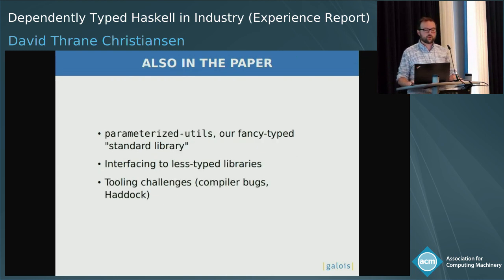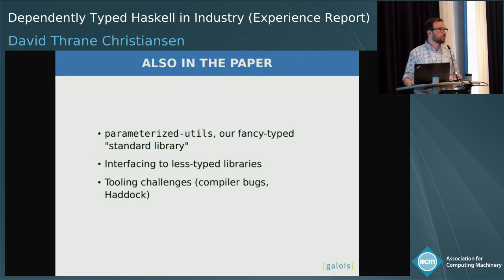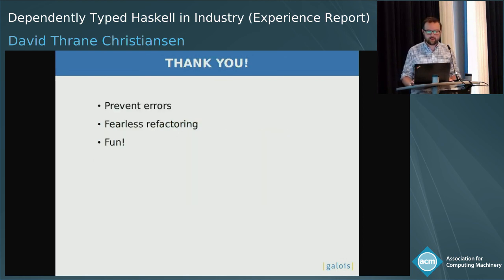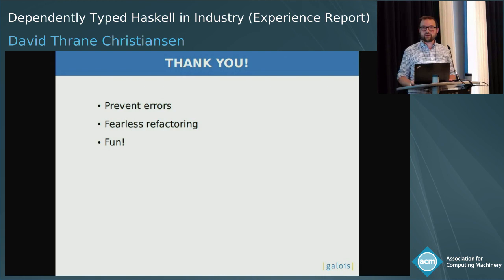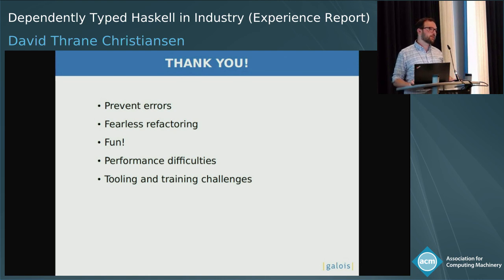So if you want to read our experience report, and also read about our extra standard library for doing this style of programming called parameterized-utils — which is separate from Crucible and you can download it and use it in your projects — as well as about how we interface with libraries that have fewer types and some of the challenges with tooling, you can find that. Just in summary: dependently typed Haskell in a big project really can help catch bugs, really does help you refactor fearlessly — the theoretical benefits, they work. Also it's quite a lot of fun. On the other hand, you may encounter some performance difficulties and have to make occasional compromises, and you're likely to have tooling and training challenges, at least for now.